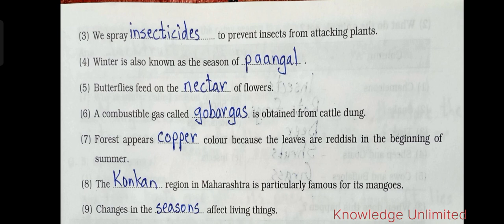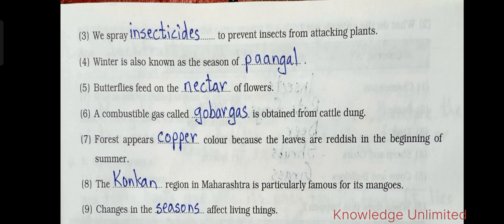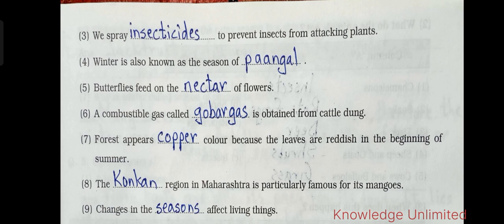Seventh one: forest appears dash color because the leaves are reddish in the beginning of summer — the answer is 'copper.' Eighth: the dash region in Maharashtra is particularly famous for its mangoes — the answer is 'Konkan.' And the last one: changes in the dash affect living things — the answer is 'seasons.'